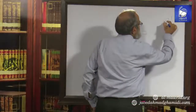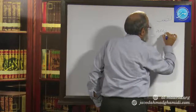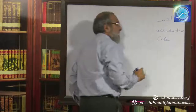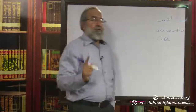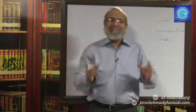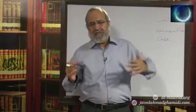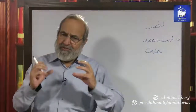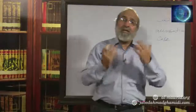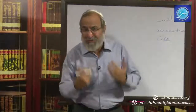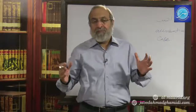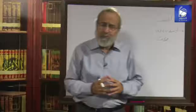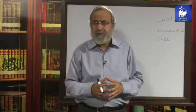Nasab is the accusative case. I did not mention it before because when it comes to Rafa or Jar, we have a limited number of possibilities — in Rafa there are four, in Jar there are two. We have done with the understanding of why nouns take Rafa and Jar forms. When it comes to Nasab, the possibility is much bigger. There are a far greater number of different reasons why a noun appearing in a sentence would take this accusative case of Nasab.